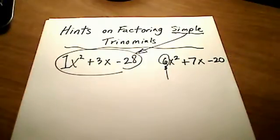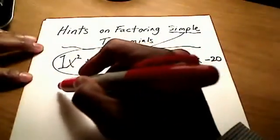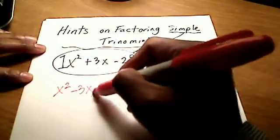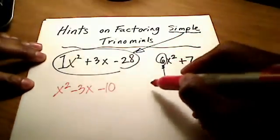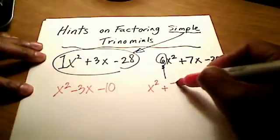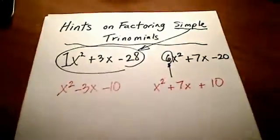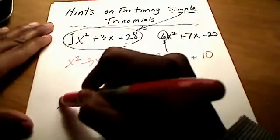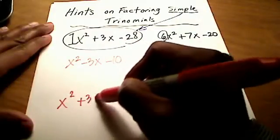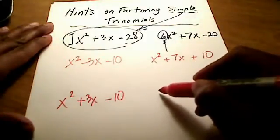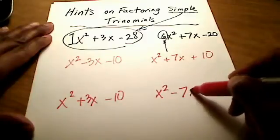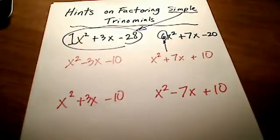I gave you an example of a simple trinomial. Now let's look at the hints for factoring these. Here are four examples: x squared minus 3x minus 10, x squared plus 7x plus 10, x squared plus 3x minus 10, and x squared minus 7x plus 10. All of these are simple trinomials because the leading coefficient is 1 for each one — there's really a number 1 sitting in front of each of these x squared terms.